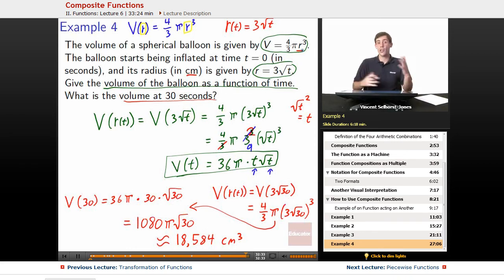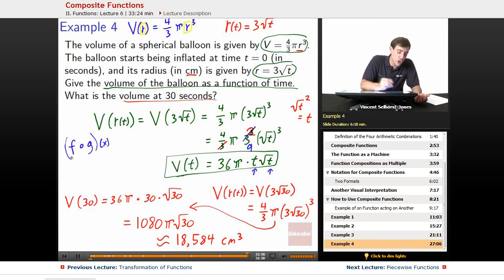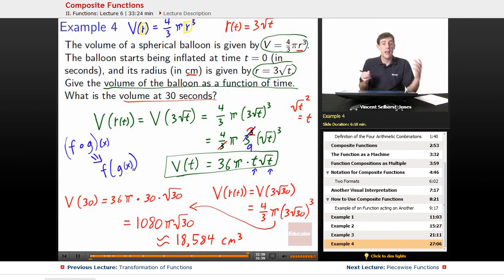That completes it for composite functions. I hope you have a much better understanding of what's going on. Remember, when you see that circle, it means composed with, but it's much easier to break it into f of g of x, or g of f of x, depending on the order it goes in. And remember, it's just going to be based off of the order that they're hitting the x in. Whoever's closer goes first.